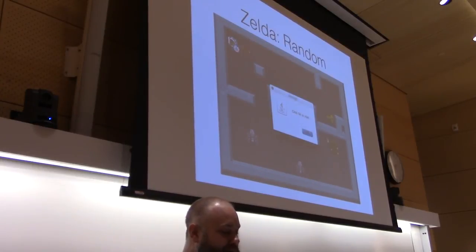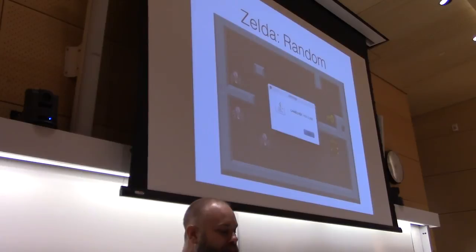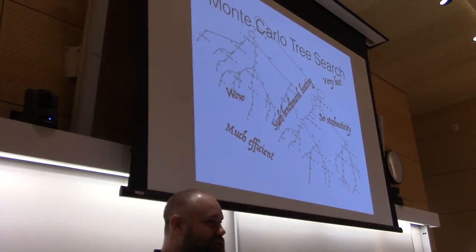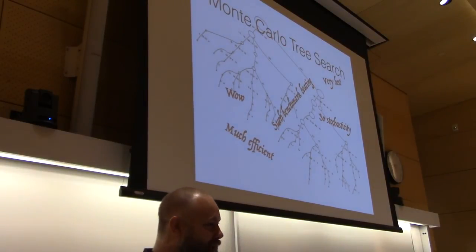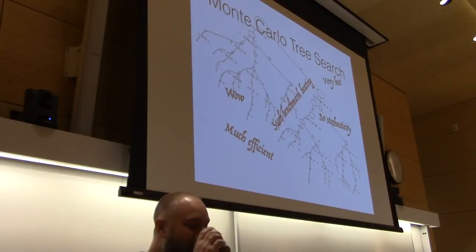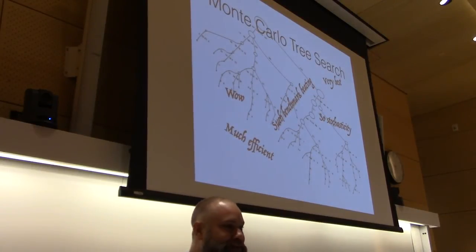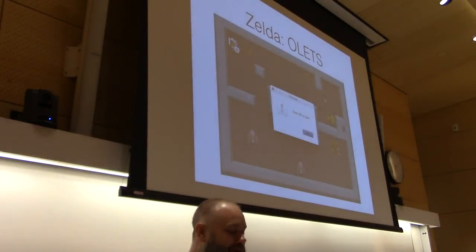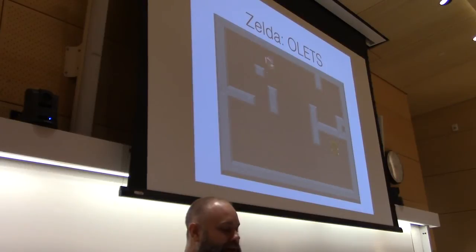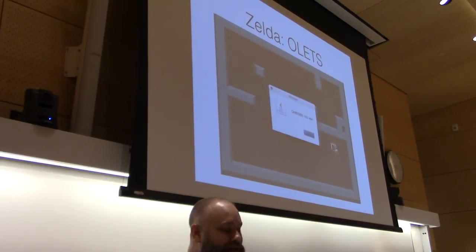This is our game called Zelda — it mimics the battle scenes of the original 8-bit Zelda. You get monsters, collect keys, go through doors. Here's a human playing it. Here's a random player — not so good. Monte Carlo Tree Search is the algorithm these days. It expands its search tree in an unbalanced manner, and here we have Open Loop Expectimax Tree Search playing this game and doing really well — getting the key, killing monsters, finding the door.